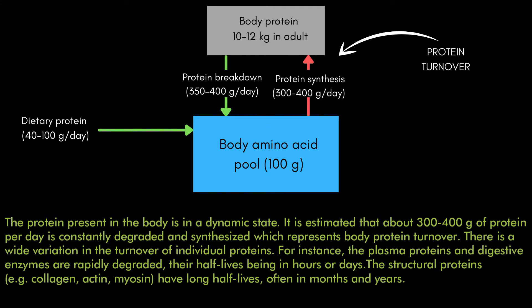Through protein turnover, amino acids are picked from the pool, used to synthesize proteins, and when those proteins degrade, the amino acids return to the pool. Every protein in our body gets recycled after some days, months, or years — 300 to 500 grams per day in a healthy adult. If you're exercising heavily without adequate protein intake, your body will break down muscle tissue to supply amino acids, leading to muscle wasting.